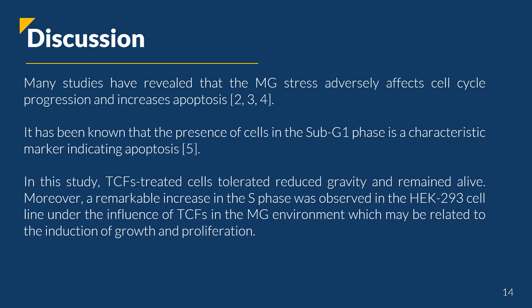Many studies have revealed that microgravity stress adversely affects cell cycle progression and increases apoptosis. It has been known that the presence of cells in the sub-G1 phase is a characteristic marker indicating apoptosis. In this study, T-Consciousness Fields treated cells tolerated reduced gravity and remained alive. Moreover, a remarkable increase in the S-phase was observed in the HEC-293 cell line under the influence of T-Consciousness Fields in the microgravity environment, which may be related to the induction of growth and proliferation.